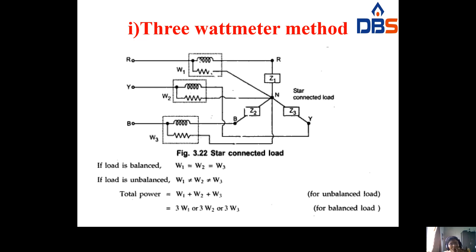In the three wattmeter method, we use three wattmeters W1, W2, and W3. All three loads are connected in a star connection. These three wattmeters are assigned to the three phases: W1 is connected to the R phase, W2 is connected to the Y phase, and W3 is connected to the B phase. For each wattmeter, the respective loads are connected: Z1 for W1, Z2 for W2, and Z3 for W3. The three loads are connected in a star connection.